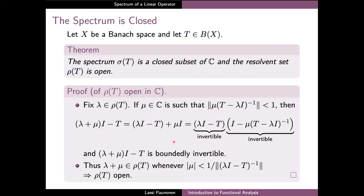Consequently, lambda plus mu belongs to the resolvent set of T. This concludes that our point lambda indeed has a small neighborhood which is contained in the resolvent set. And since lambda was arbitrary, we have proved that the resolvent set of T is open.